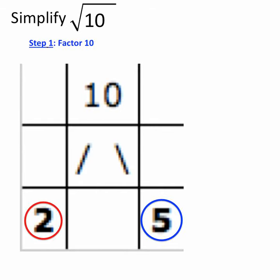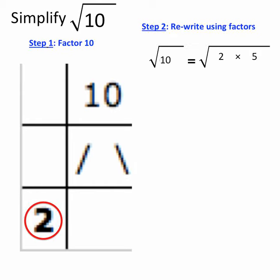Now that I know my factors of 10, I can simplify root 10. The next step that I want to do is to rewrite using those factors. So I say that root 10 is equal to root of its factors, which in this case is 2 times 5.